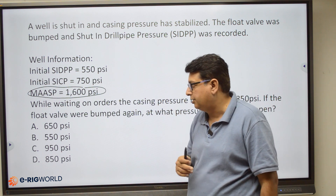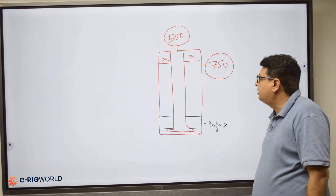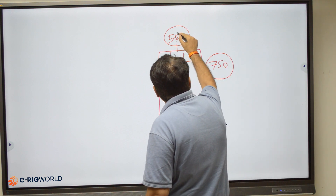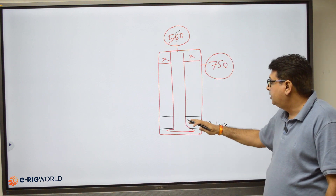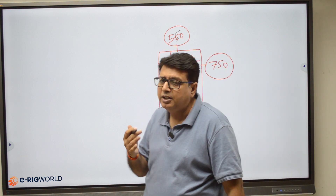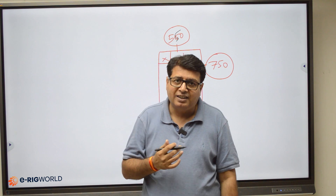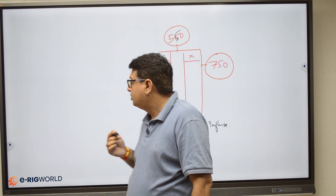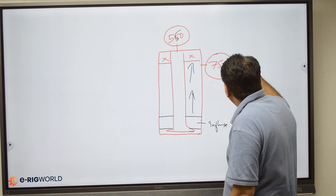So here we have SIDPP of 550 and SICP of 750. The influx is at the bottom, and while waiting for orders, the gas will start moving upwards. This is called migration — gas migrates upwards, causing an increase in casing pressure.